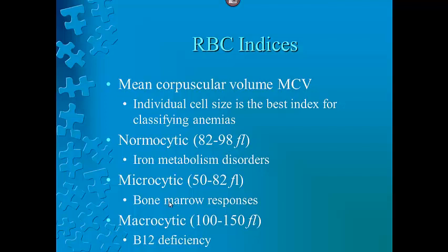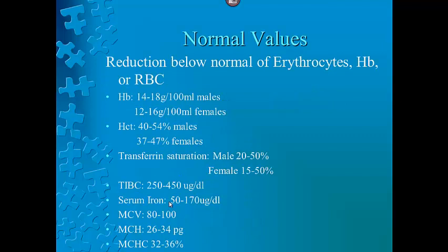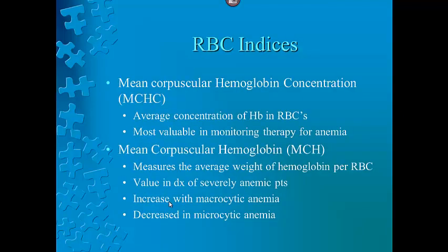The indices — mean corpuscular hemoglobin and mean corpuscular hemoglobin concentration — are most valuable in monitoring therapy for anemia. MCHC reflects the color of the cell and the average concentration of hemoglobin in the red blood cell.